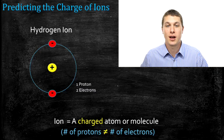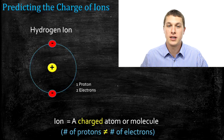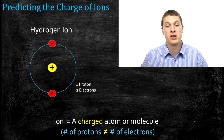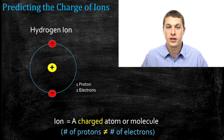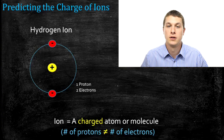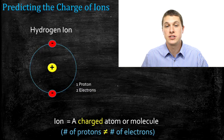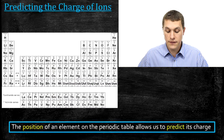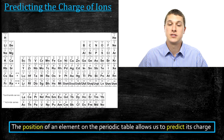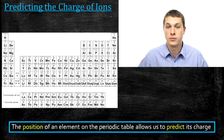In this episode of Real Chemistry, we're going to talk about predicting the charge of an ion. Basically, we're thinking about elements that have an unequal number of protons and electrons. If you take a look at the atom below, you'll see that it has one proton but two electrons, and that means its overall charge is negative one. It turns out that just using the periodic table, you can actually predict what charge different elements will tend to take on. The key factor is that the position of an element on the periodic table allows us to predict what charge an ion will take on.